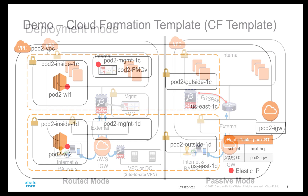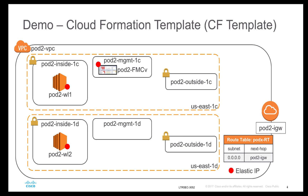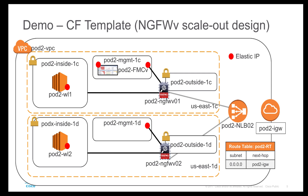For this demo I will be using CloudFormation templates. The first CloudFormation template will deploy the base network — a virtual private cloud with two availability zones, each having three subnets: inside, outside, and management. In addition, it will also deploy an internet gateway and route tables. The second template will show our scale-out solution leveraging the Network Load Balancer of Amazon Web Services.